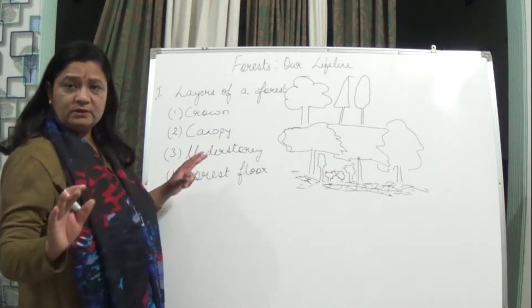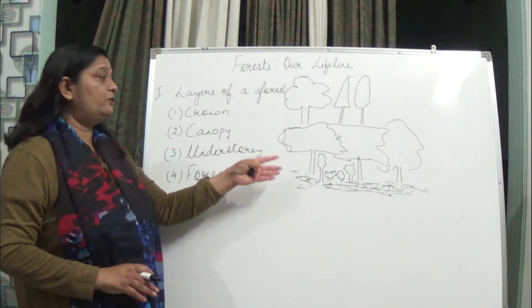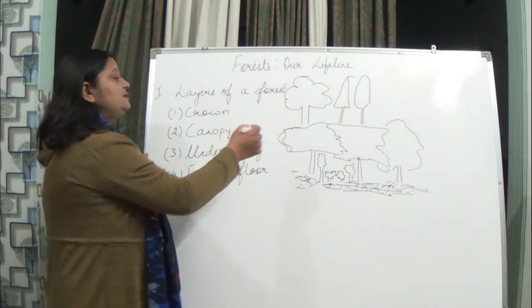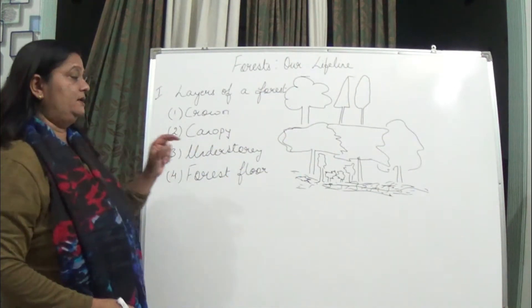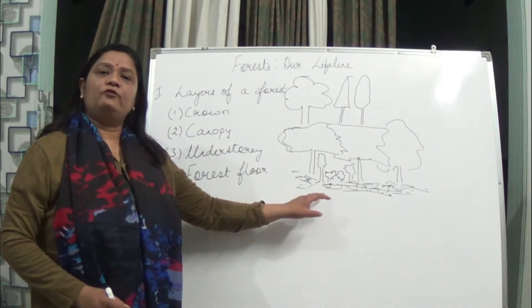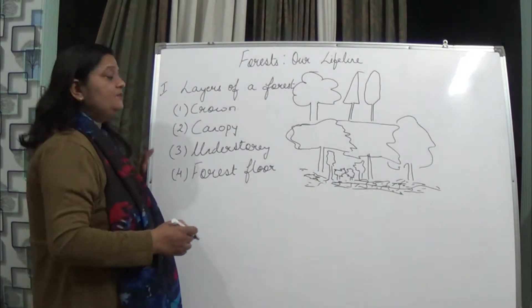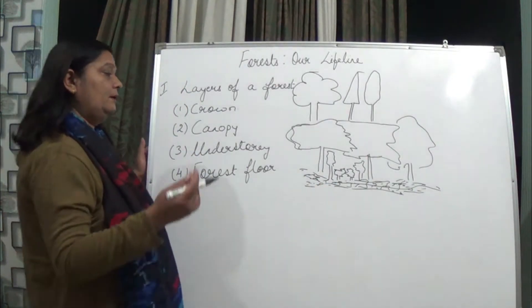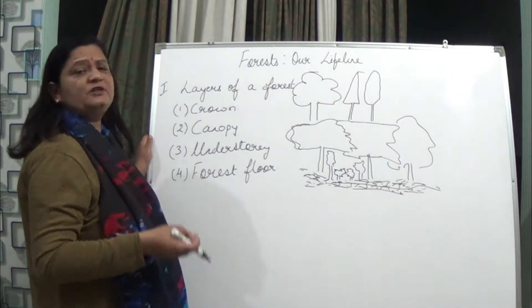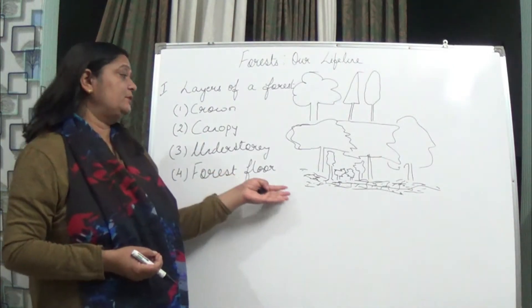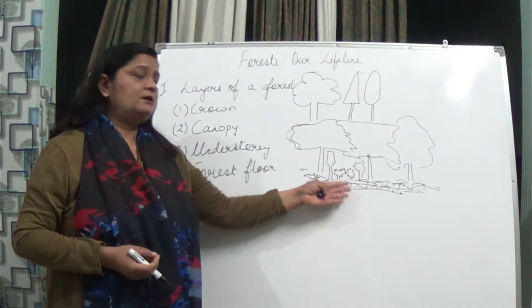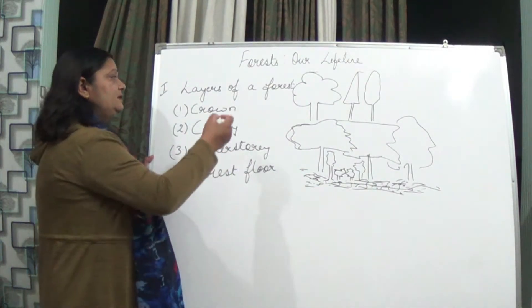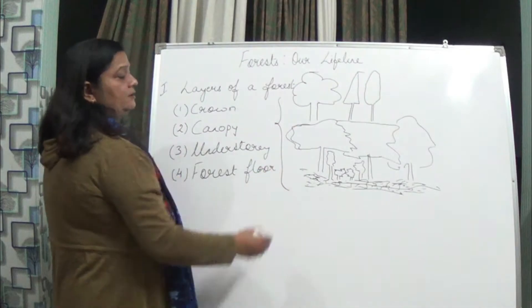The canopy covers the whole surface, so the forest floor appears to be darker because the sunlight cannot properly reach the forest floor. All the layers — the forest floor layer with dead and decaying leaves, animals, centipedes, millipedes, and microorganisms — the animals also survive in the forest floor layer. The forest has got different layers.